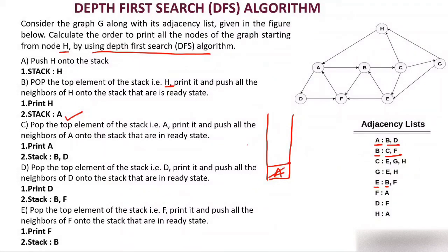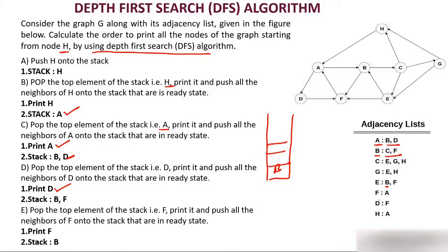Pop the top element A, print it, and push all the neighbors of A. The neighbors of A are B and D, so push B and D onto the stack. Now pop the top element — which is D — print it. After removing D, insert all its neighbors. The neighbor of D is F, and F has not been inserted yet, so push F. Now the stack has B and F.